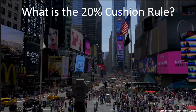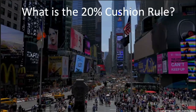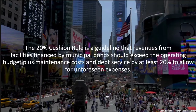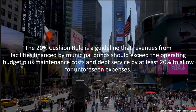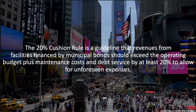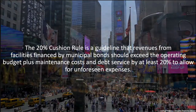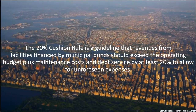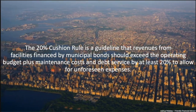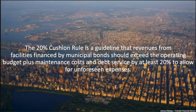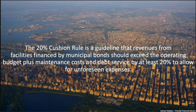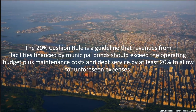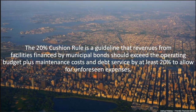What is the 20% Cushion Rule? The 20% Cushion Rule is a guideline that revenues from facilities financed by municipal bonds should exceed the operating budget plus maintenance costs and debt service by at least 20%, to allow for unforeseen expenses.